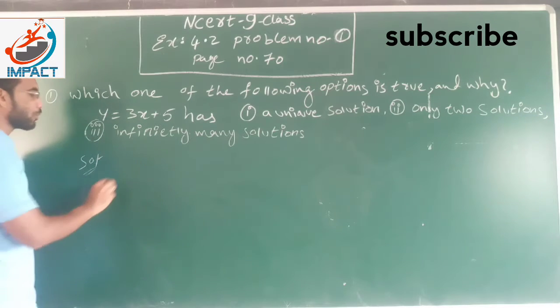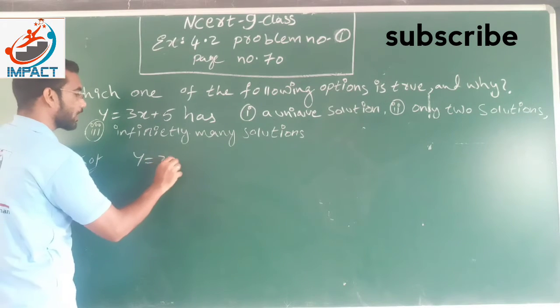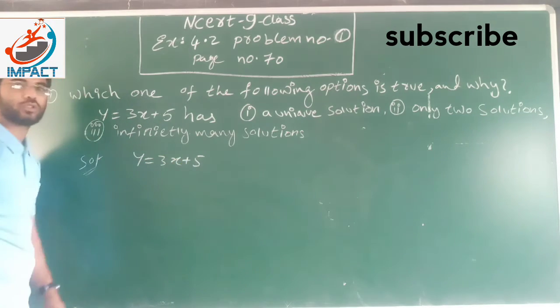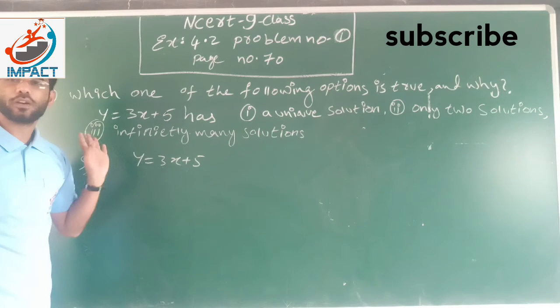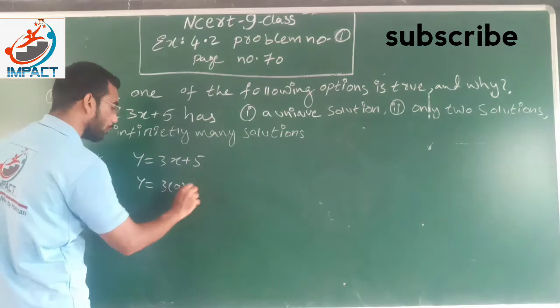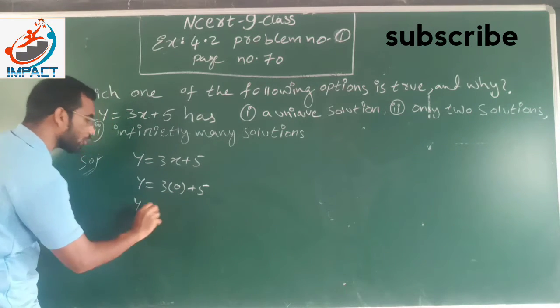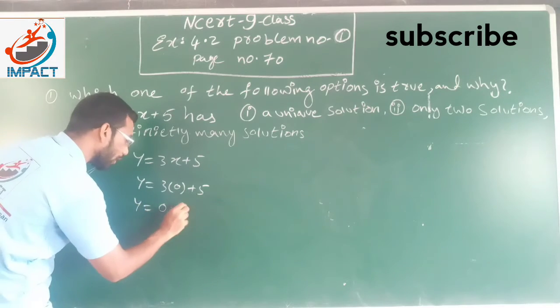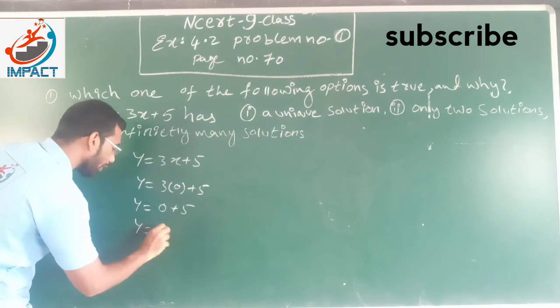First we will put y equals 3x plus 5. What you put in the place of x? It will get the value of y. See, y equals 3 times 0 plus 5. y equals 3 times 0 plus 5. So y equals 5.